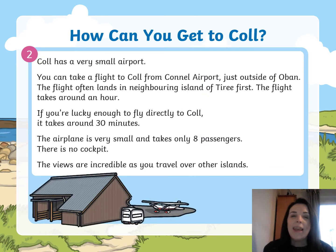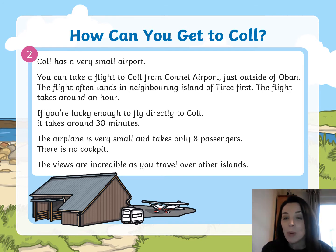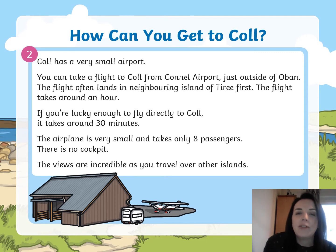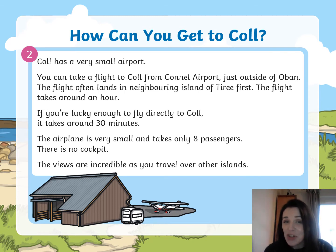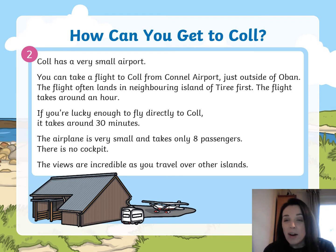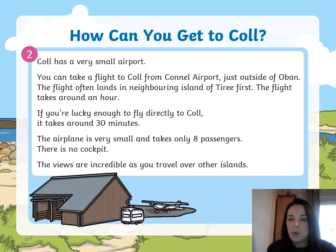How else can you get there? The second way is they have an airport. Do you remember when I was saying about how people get to St Lucia — that St Lucia has actually got two airports? You can take a flight to Coll from Connell Airport, just outside of Oban. The flight often lands on the neighbouring island of Tiree first. The flight takes around an hour. If you're lucky enough to fly directly to Coll, it takes around 30 minutes. The aeroplane is very small and takes only eight passengers — there is no cockpit door! Can you imagine being in an aeroplane that only has room for eight people? It's like smaller than a bus. The views are incredible as you travel over other islands. Because you're not going as far, it's a shorter plane journey, so you'd be able to see all of those Hebrides islands, which would be amazing.